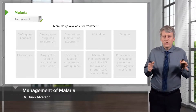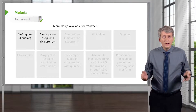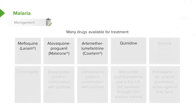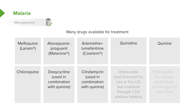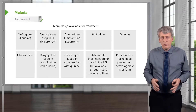Speaking of drugs, let's look at all the drugs available for the treatment of malaria. We have mefloquine, atovaquone, hydroxychloroquine (Plaquenil), coartem, quinidine, quinine, and chloroquine — all the quinolines. Doxycycline can be used, sometimes in combination with quinine, and same thing with clindamycin. And then there's artesunate, which is not licensed for use in the US, although it is available through the CDC hotline if you have a resistant organism and need that drug. And last, primaquine, which is really for relapse prevention because it's directed mostly against the liver form.